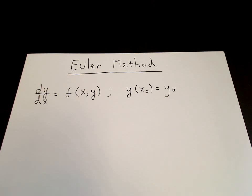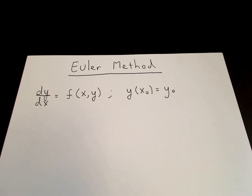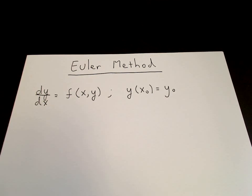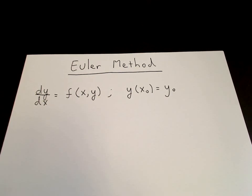basically just build on the Euler method. So we have a differential equation dy/dx equals some function of x and y, a first-order equation. And we have an initial condition y(x₀) = y₀.